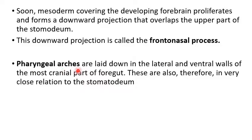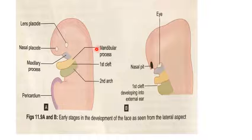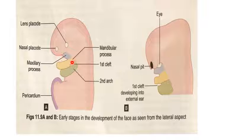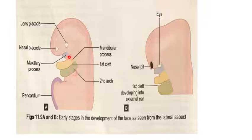Then the pharyngeal arches are laid down in the lateral and ventral wall of the most cranial part of the foregut. These are therefore in very close relation to the stomodium. This diagram shows the frontonasal process, pericardial bulging, the first arch that is the mandibular arch, and the stomodium. The neck region is elongated by the appearance of the various pharyngeal arches.